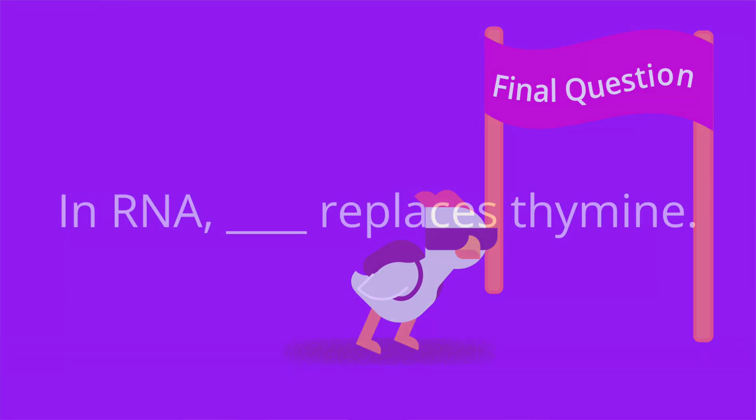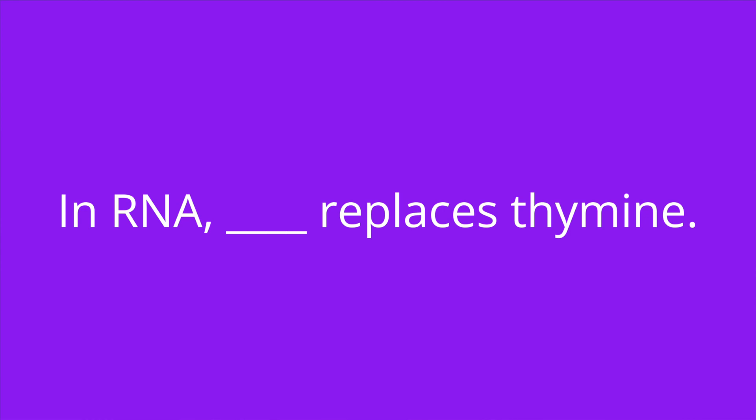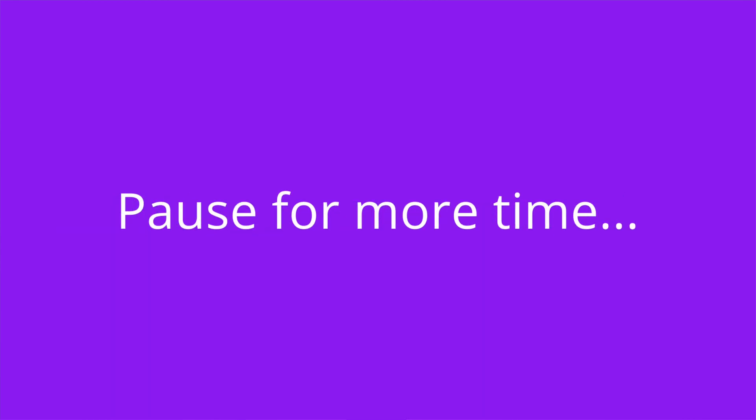And question number five. In RNA, blank replaces thymine. The answer is uracil.